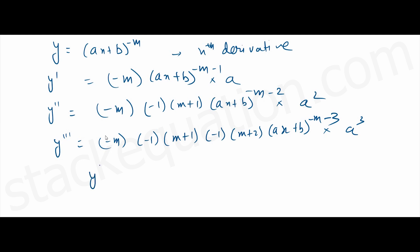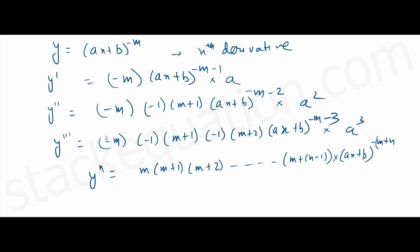If you observe, for the nth derivative, it's m into (m + 1) into (m + 2) and so on. For the third derivative it went to (m + 2), so for the nth derivative it will go to (m + n minus 1). Into (ax + b) to the power minus m, and for the nth derivative this will be minus n, so minus (m + n), into a to the power n.